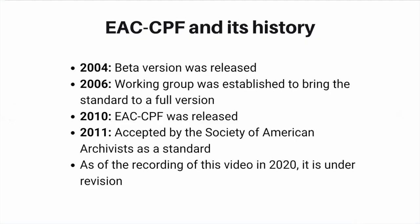Encoded Archival Context — Corporate Bodies, Persons and Families, or EAC-CPF — was inspired at the same time that EAD was being adopted, but its development was stretched over several years. A beta version of EAC was released in 2004 and a working group was established in 2006, charged with bringing the standard to a full version. EAC-CPF was released in 2010 and accepted by the Society of American Archivists, or SAA, as a standard in 2011. As of the recording of this video in 2020, it is under revision.